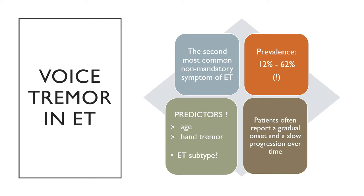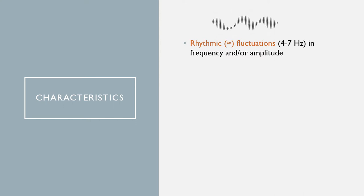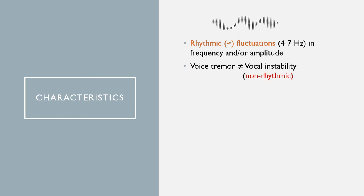Patients with voice tremor often report a gradual onset of the symptom and a slow progression over time, suggesting that voice tremor is likely to progress just like tremor in other body parts. The specific characteristics of voice tremor are involuntary rhythmic or near-rhythmic oscillations in frequency — that is pitch — and amplitude — that is loudness — causing the voice to sound tremulous and shaky. Voice tremor should not be confused with vocal instability; these are two different voice symptoms even if they can coexist. Vocal instability lacks the rhythmicity of tremor and is often perceived as more unpredictable.